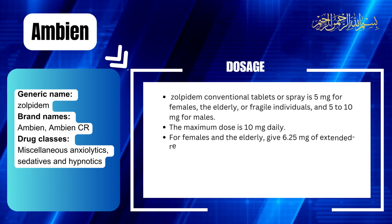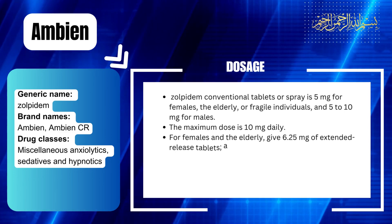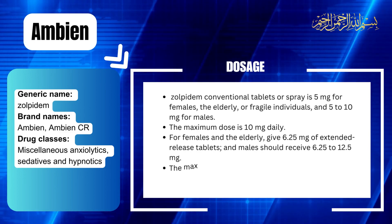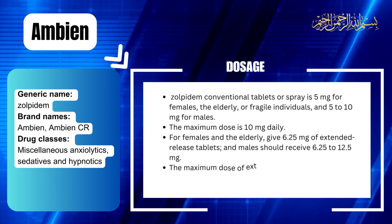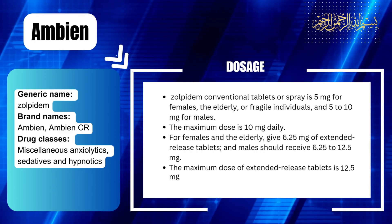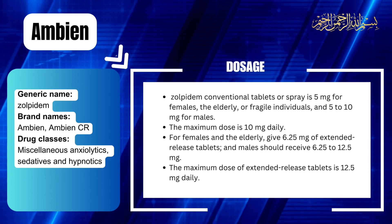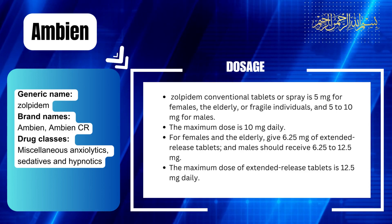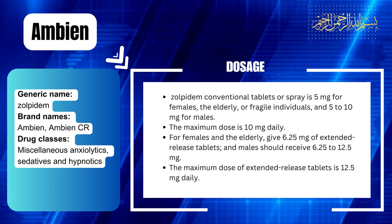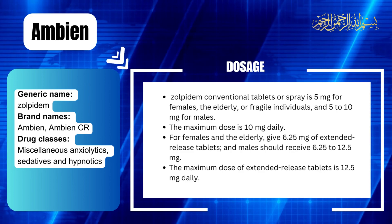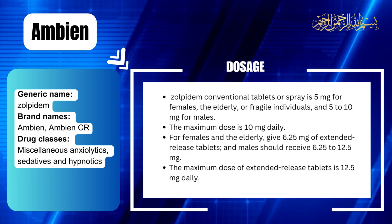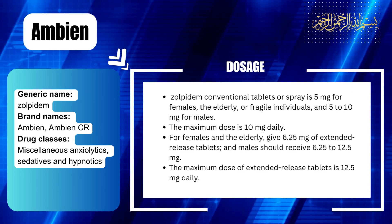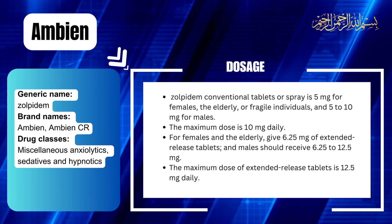For females and the elderly, give 6.25 mg of extended-release tablets, and males should receive 6.25 to 12.5 mg. The maximum dose of extended-release tablets is 12.5 mg daily. Elderly patients have decreased ability to eliminate Zolpidem from the body, and accumulating Zolpidem may cause side effects.